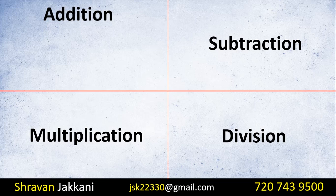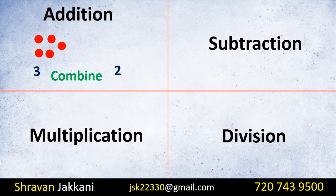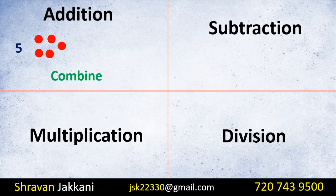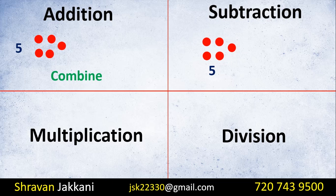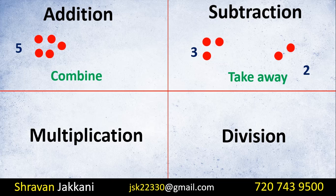Addition means we have two values. For example, here we have 3 and 2. If we have subtraction, we have 5, so 5 minus 2 is 3. Subtraction is the column where we take away, and addition is the column where we add.